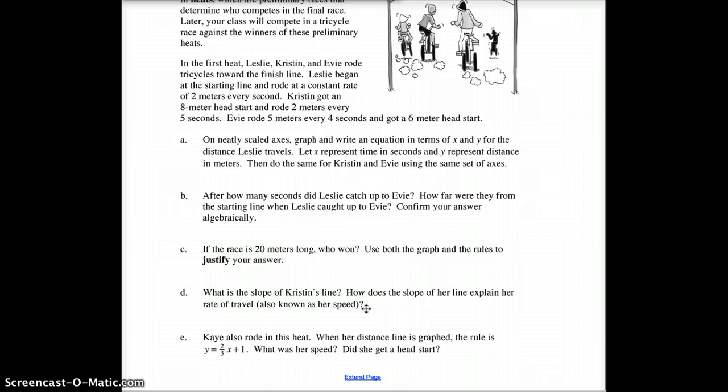Finally, letter E: K also rode in this heat. K is a brand new name—K wasn't listed before, so there was a fourth rider. When her distance line is graphed, the rule is y equals two-thirds x plus one. Go ahead and put her on the graph as well. What was her speed and did she get a head start?